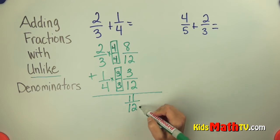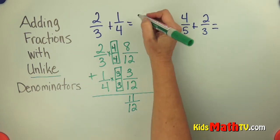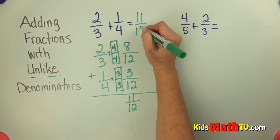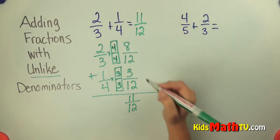Then I have to check, can I reduce my answer at all? Is there a number that will divide both 11 and 12 evenly? No, there's not. So the answer is 11 12ths. 2 thirds plus 1 fourth equals 11 12ths. And that's in simplified terms.